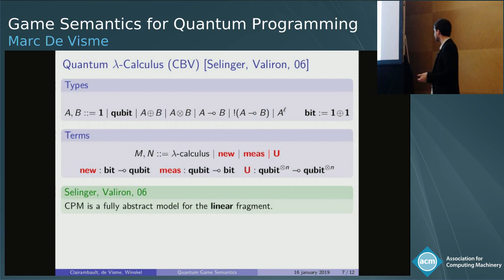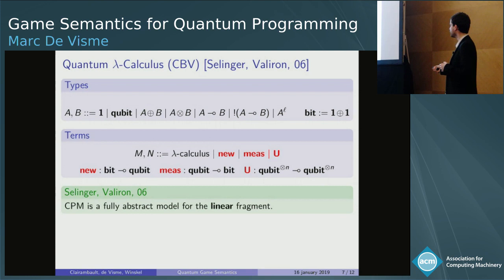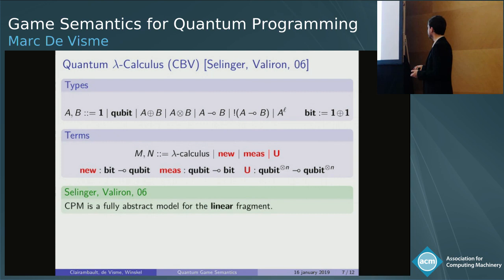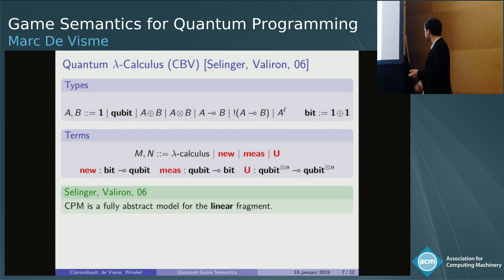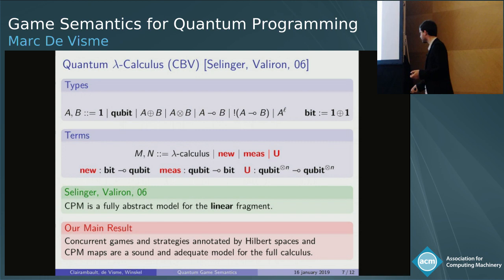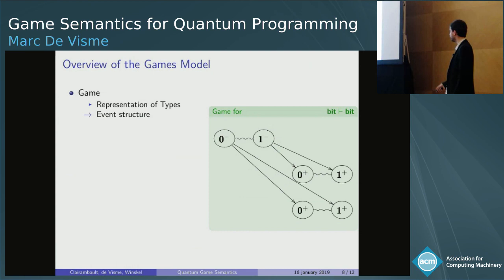CPM by itself is what is called a compact closed category. Selinger and Valiron showed that CPM is a fully abstract model for the linear fragment — the compact closure allows you to represent every higher-order function as a first-order one. They later completed it to include the bang, recursion and replication. Our model is also about this extension. Our main result is that quantum games and strategies form a sound and adequate model for the full calculus, with bang, replication and recursion.